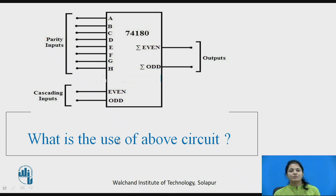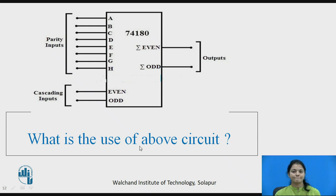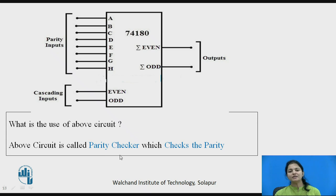A question is posed: what is the use of the 74180 circuit? This circuit is a parity checker, as just explained. Whatever number is given to it, with the help of this IC it will provide an output indicating whether that number has even parity or odd parity.